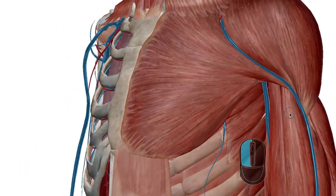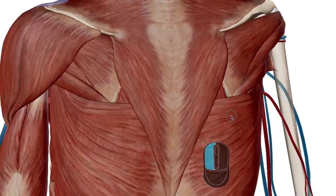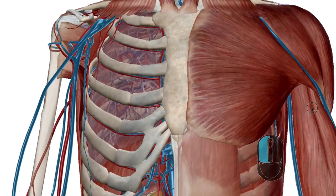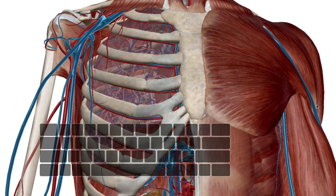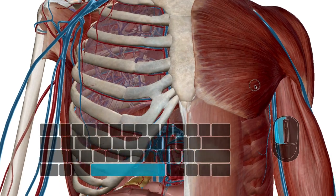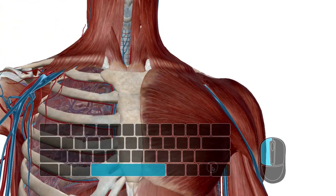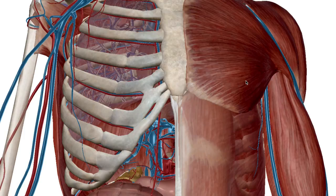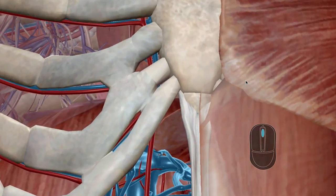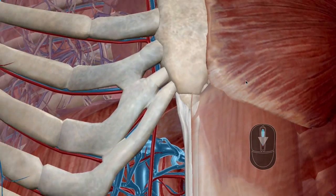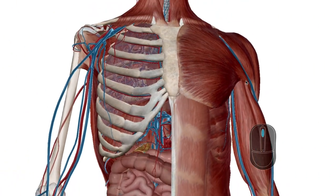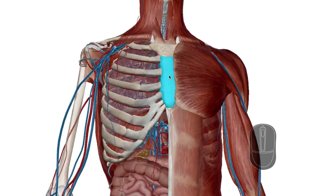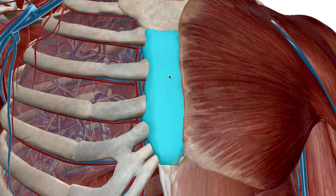Left-click on the model to rotate. Hold down the spacebar and drag the mouse to move the model around the screen. Scroll up and down on the mouse to zoom in and out. Double-click on the model to automatically zoom into and center the object on screen.